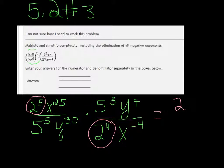Now let's look at the x's. I've got an x here and an x here. So I have 25 minus a negative 4. When you subtract a negative, you add. So that's going to be x to the 29th.